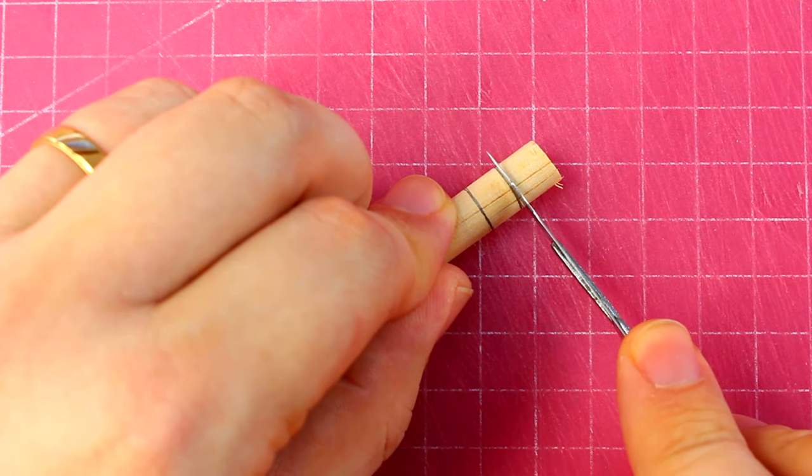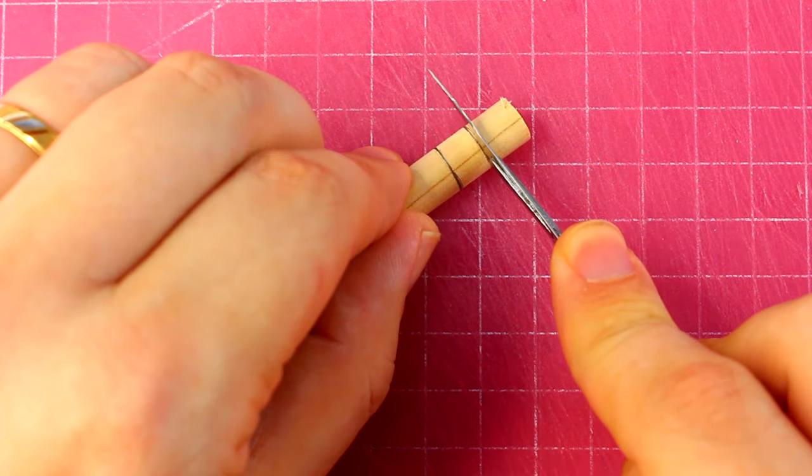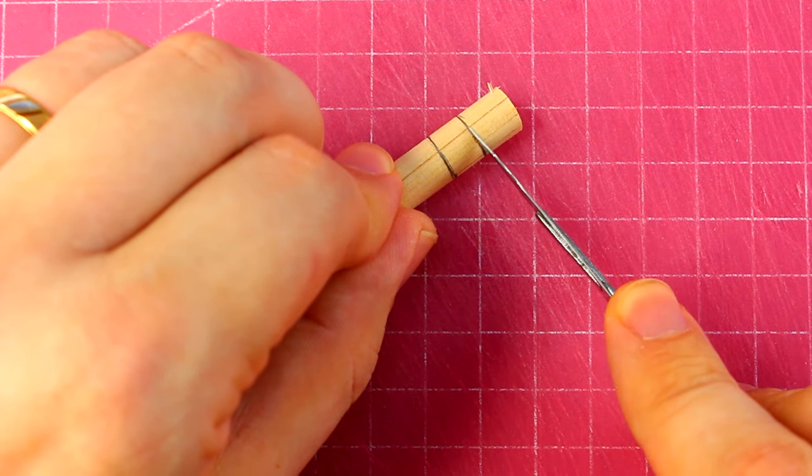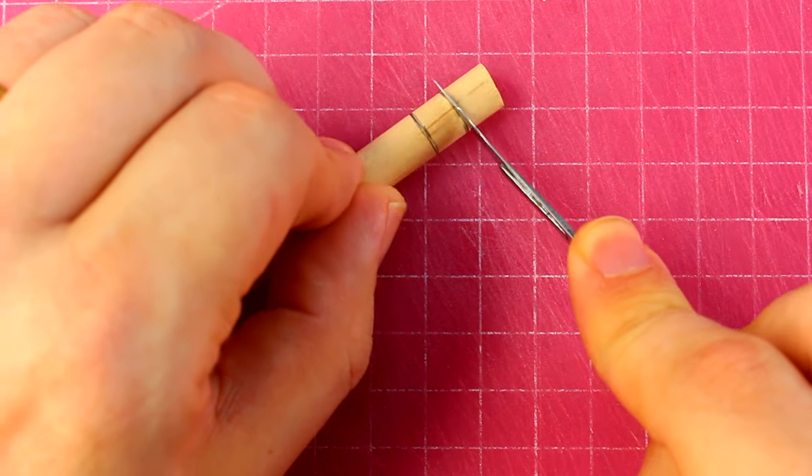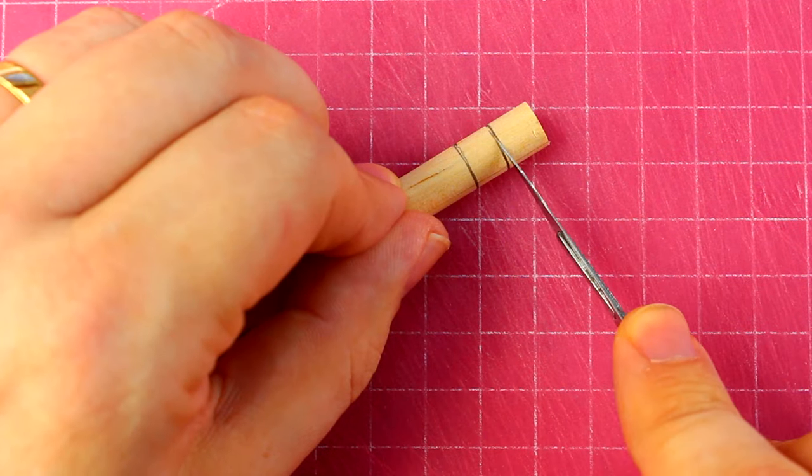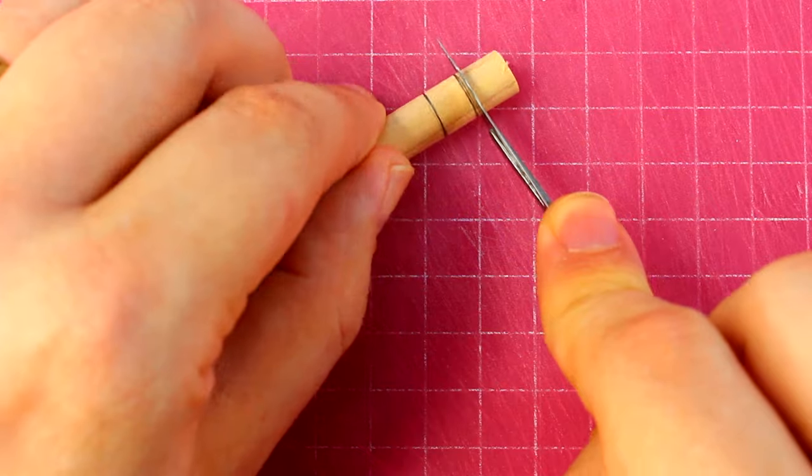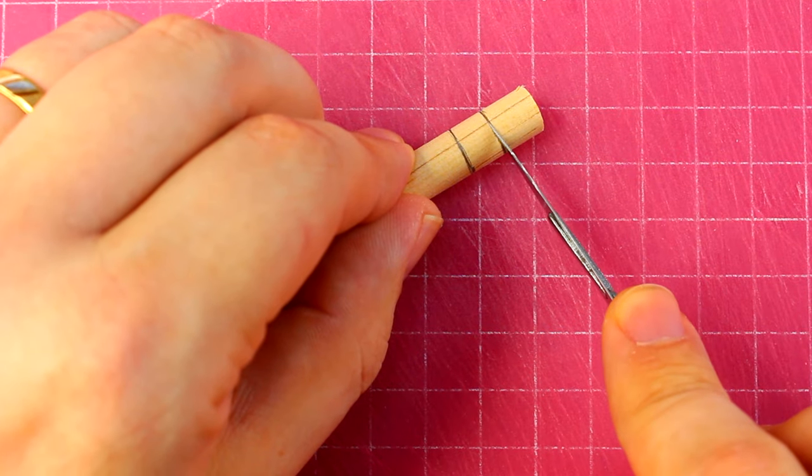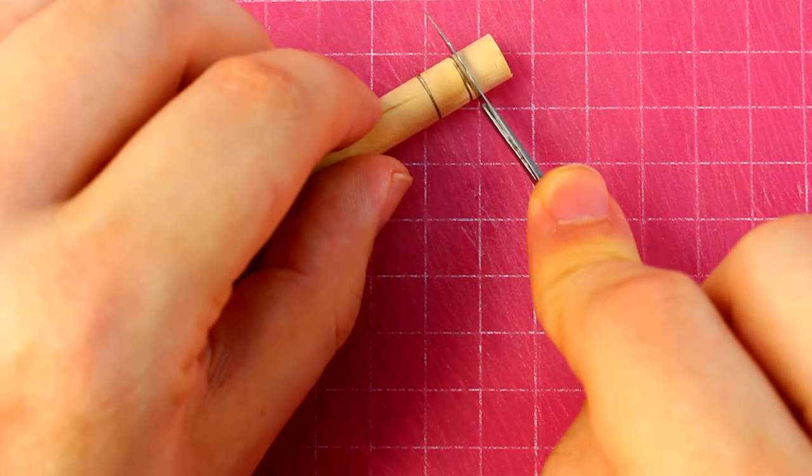I'll start the carving by cutting into spots where I want to remove material. These cuts serve as a relief for the little chips so they don't stick to the dowel. Roll the dowel while pressing down on the knife. You don't have to press very hard. We can make this cut deeper later on if we have to.